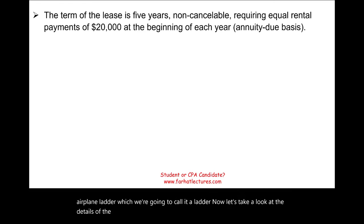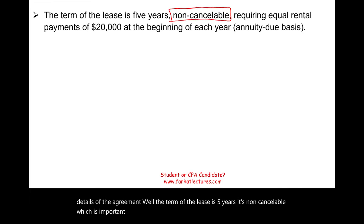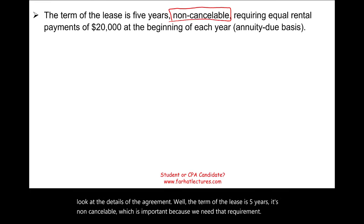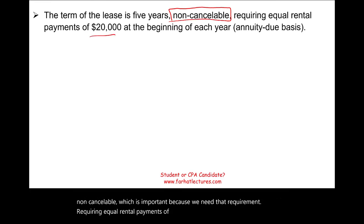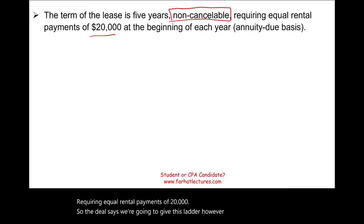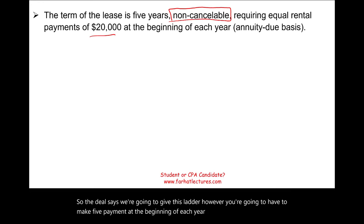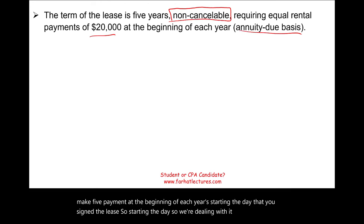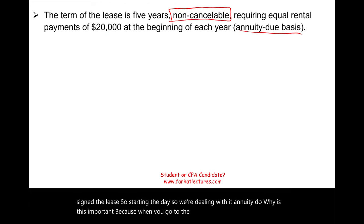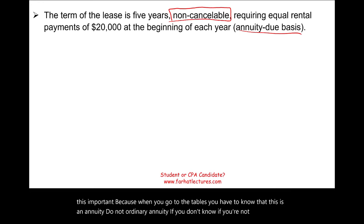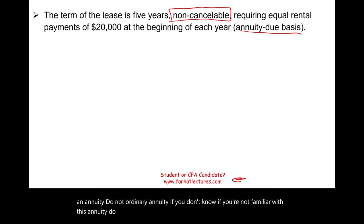The term of the lease is five years, non-cancellable, requiring equal rental payments of twenty thousand dollars. The deal says you're going to make five payments at the beginning of each year starting the day you sign the lease — so we're dealing with an annuity due, not an ordinary annuity. When you go to the tables you have to know this. If you're not familiar with annuity due versus ordinary annuity, you may want to review the time value of money concepts.